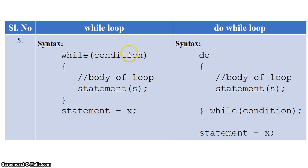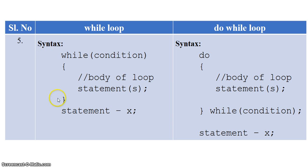Looking at the syntax differences: in while loop, since the condition is checked at the beginning, it is called entry control or pre-test loop. If the condition is true, we enter the body of the loop and execute all the statements, then check the condition again. This process of checking the condition and executing the statements continues till the condition is true. Once the condition is false, program execution continues from the next statement.